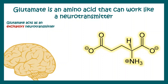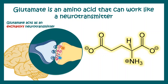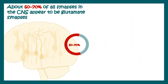Glutamate receptors are present in the postsynaptic neuron and glutamate is working as an excitatory neurotransmitter in several synapses across CNS and PNS. About 60-70% of all the synapses present in the brain are glutamatergic in nature.